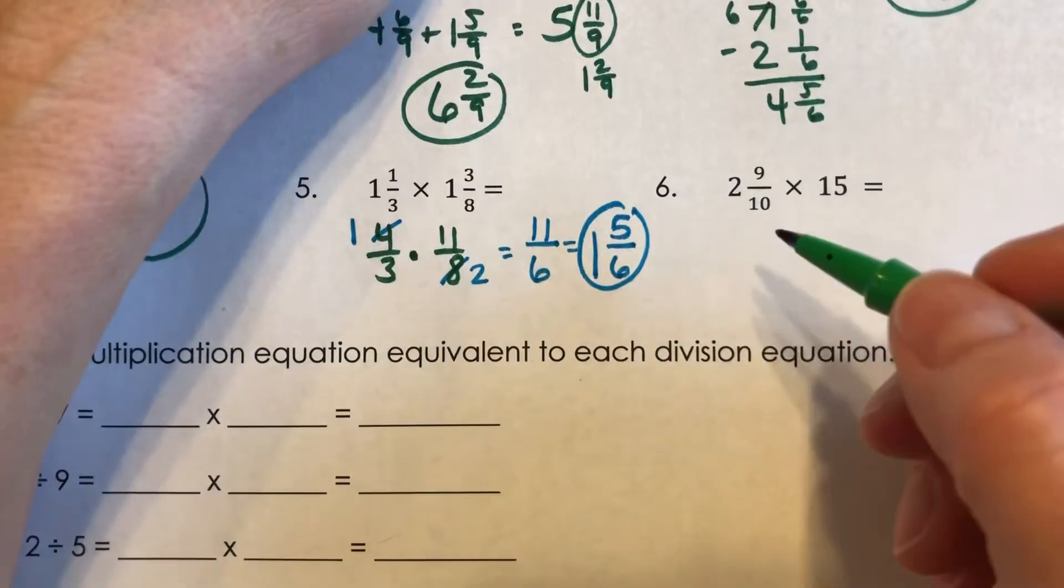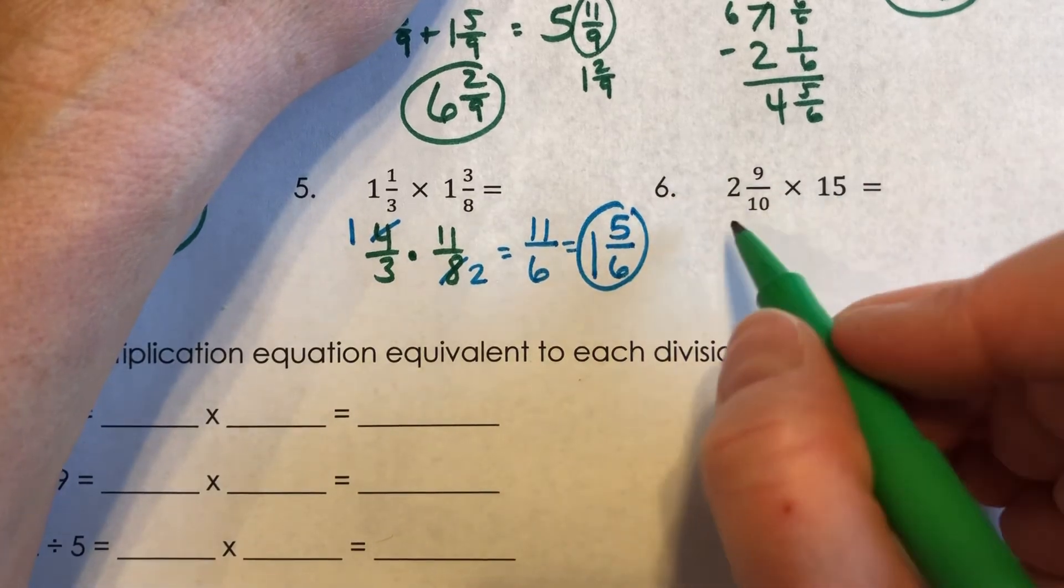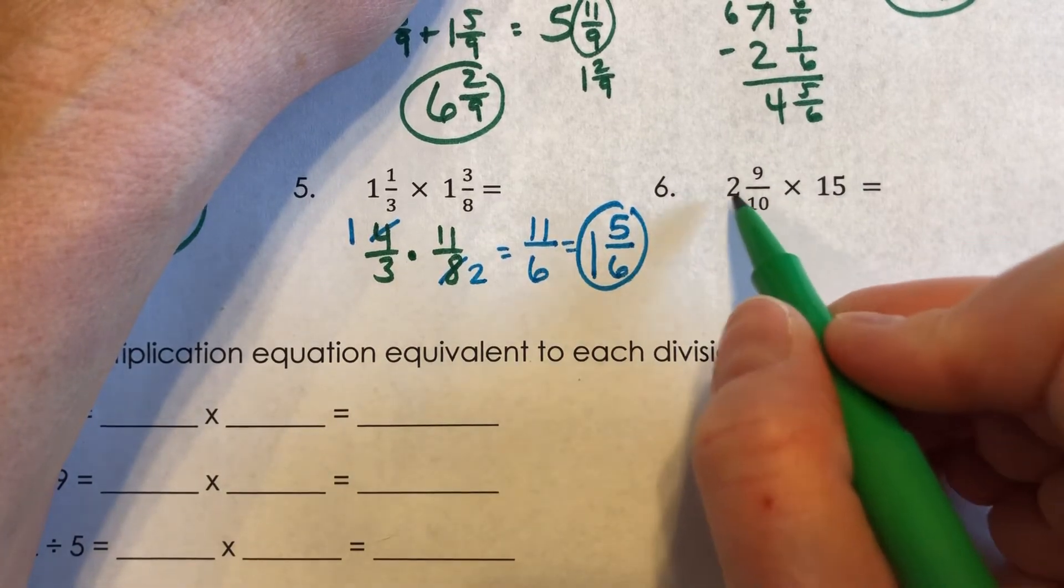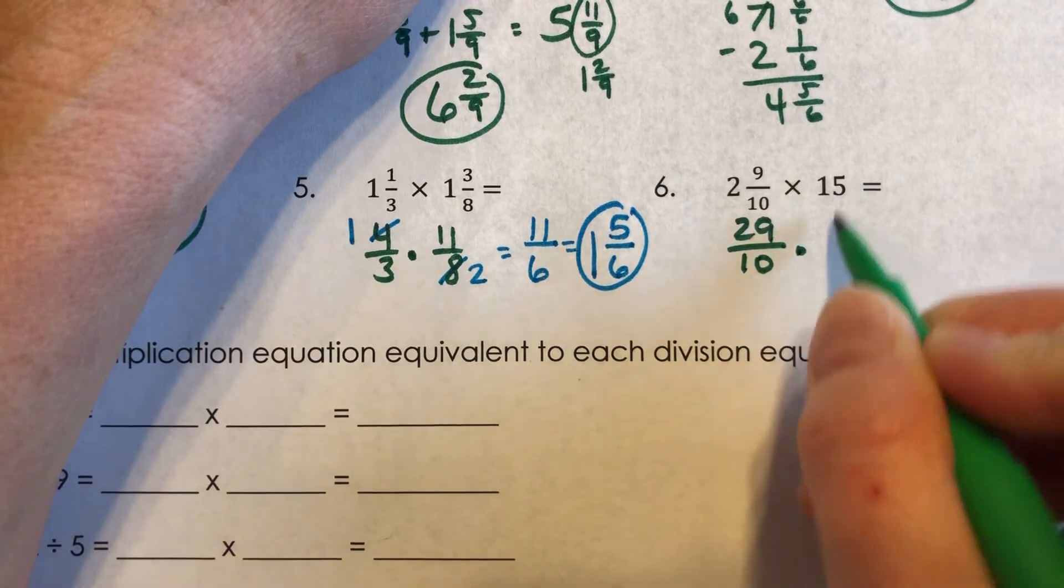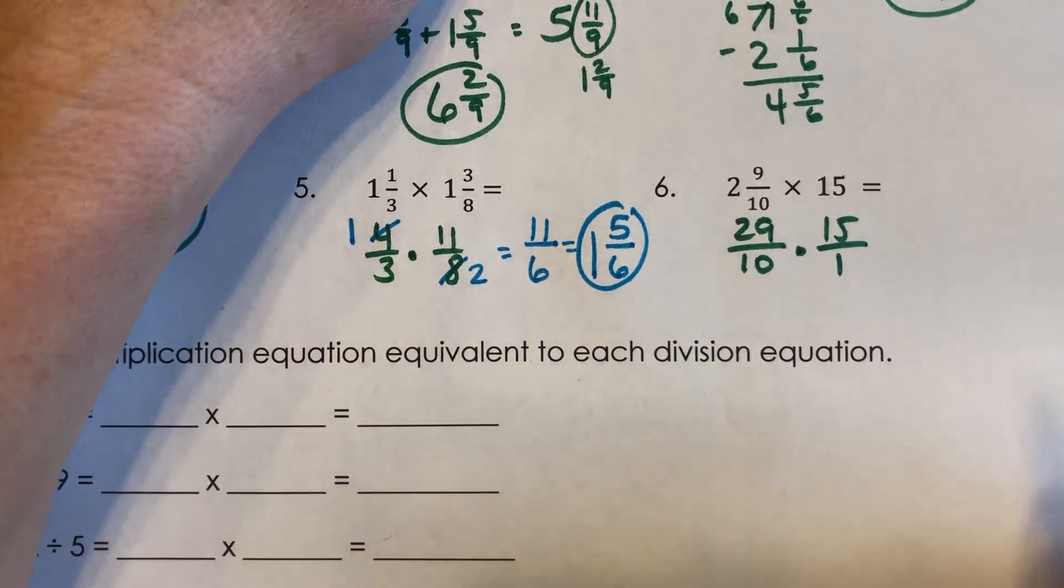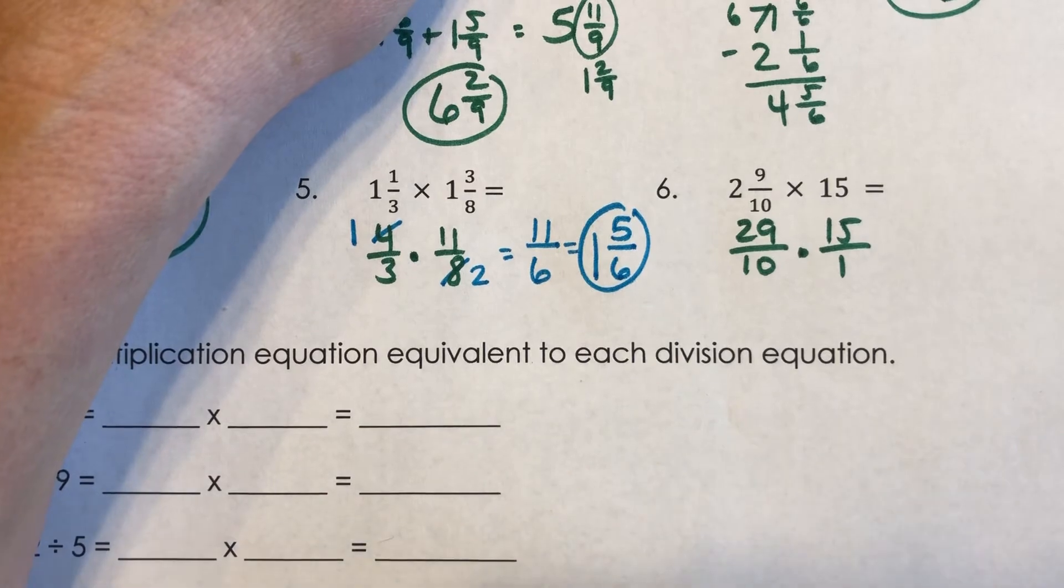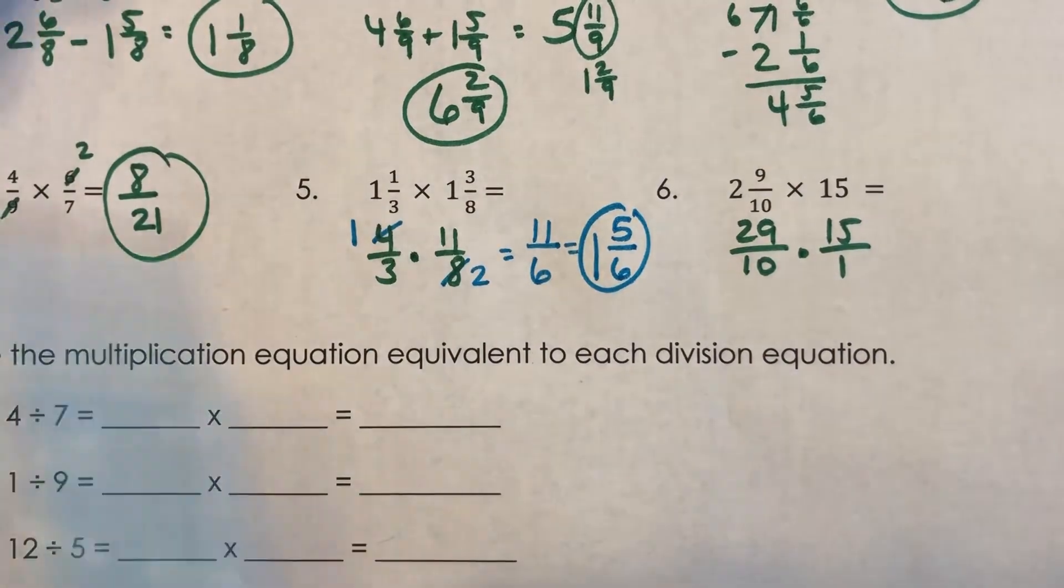And for number six, I see that we are multiplying a mixed number times a whole number. So I'm going to change this mixed number. Ten times two is twenty, plus nine is twenty-nine-tenths. And I'm going to put this fifteen over one. Now, I definitely don't want to do twenty-nine times fifteen if I don't have to. And I don't have to.